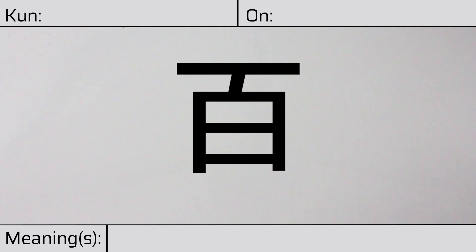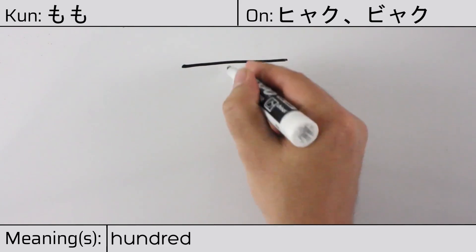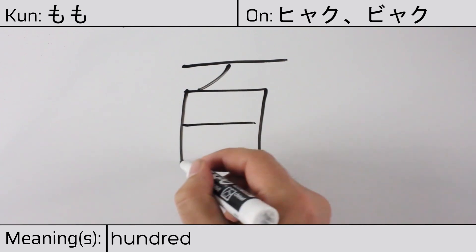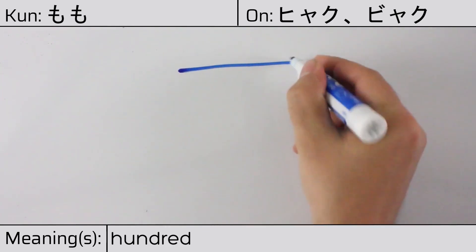Welcome to this lesson on Japanese kanji. Today, we'll be discussing this character. This kanji has a kunyomi or Japanese reading of momo, and it has onyomi or Chinese reading of hyaku or byaku. This character has the meaning hundred. Here is the stroke order.